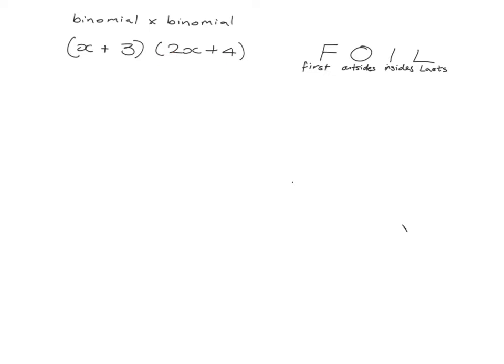So what we're dealing with is a situation where we've got this binomial multiplied with that binomial. Remember when we don't put any operation in between the two brackets, we mean multiplication. So remember when we just had three multiplied by two x plus four, your distributive law would tell you to do three multiplied by two x and three multiplied by four.